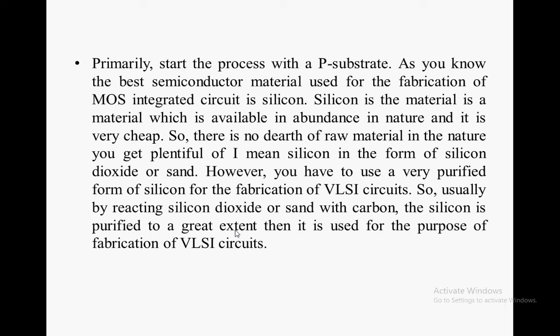The best semiconductor material used for fabrication of MOS integrated circuits is silicon. Silicon is a material which is available in abundance in nature and it is very cheap, so there is no shortage of raw material. You can get plentiful silicon in the form of silicon dioxide or sand. However, you have to use a very purified form of silicon for the fabrication of VLSI circuits.